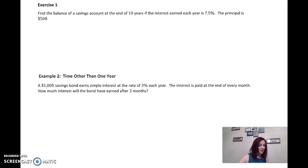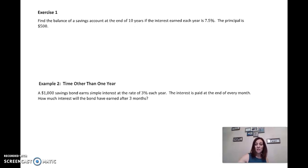All right. So again, we are working on simple interest. Let's read this question and go ahead and do it. This one says find the balance of a savings account at the end of 10 years if the interest earned each year is 7.5%. The principal is $500.